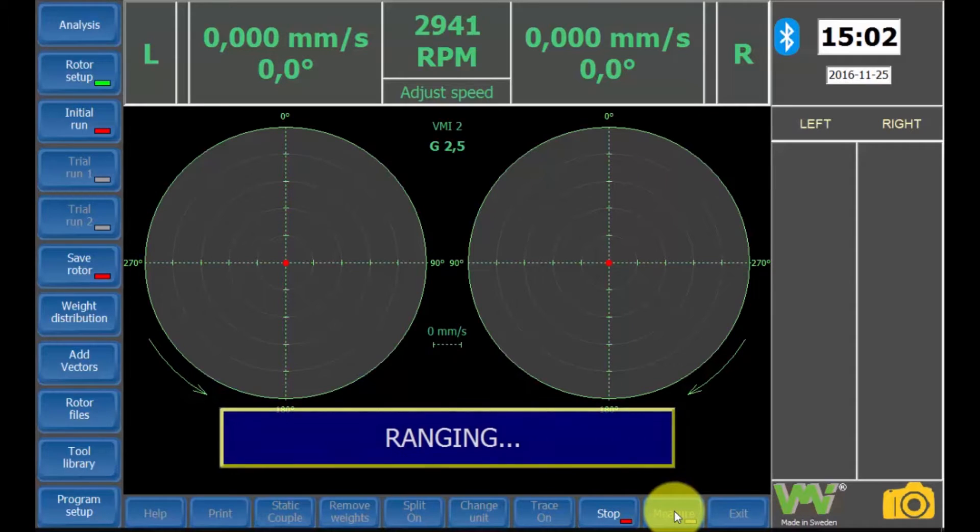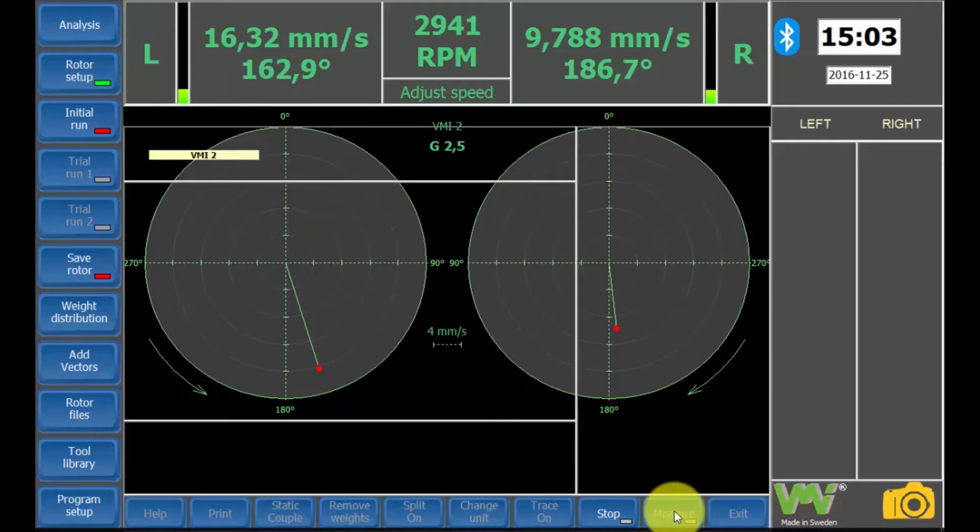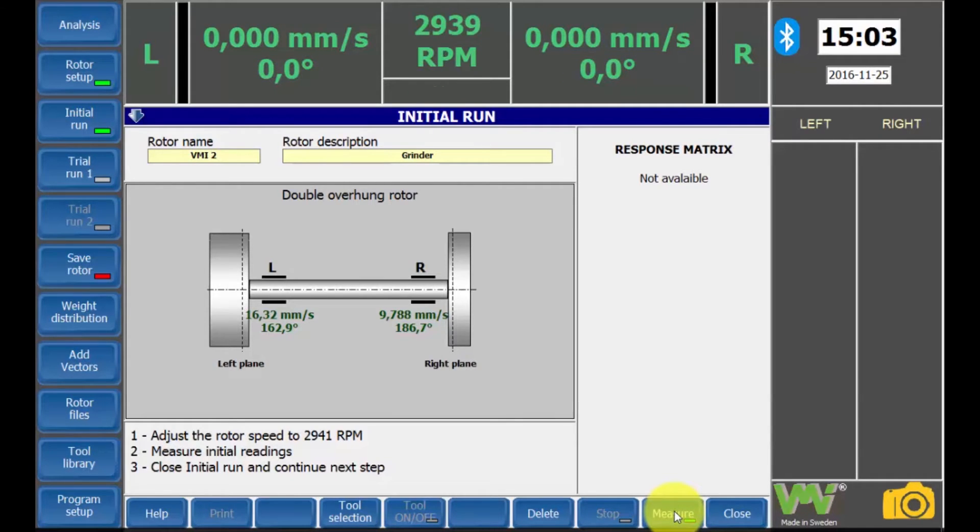Note that if the stop reading automatic option is activated, wait until the reading stops. If not, wait until the vibration and phase readings are steady and press the stop button. Now stop the motor and let the rotation speed go down to zero.